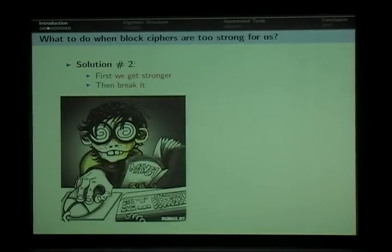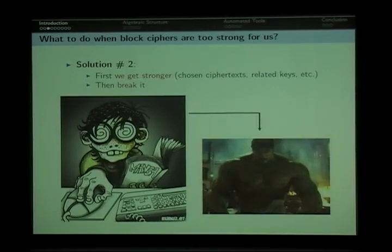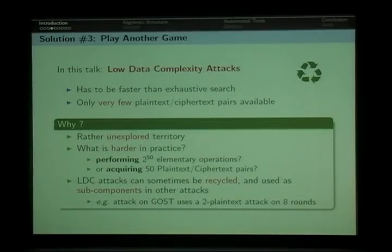And when that is not enough, we could also have another option which would be to get stronger, work in a stronger attack model. For instance, instead of having just known plaintext-ciphertext pairs, we could have chosen plaintext-ciphertext pairs, access to a decryption oracle, maybe tweak the key, have side channel information or whatever. But at this point it becomes questionable whether these assumptions make any sense in practice. So in this talk we chose a third option. We chose to focus on attacks with very low data complexity, attacks that use a very small number of plaintext-ciphertext pairs. In this way at least we are sure to be on the safe side of the practicality of the discussion about the models.